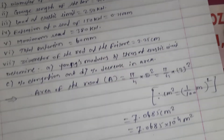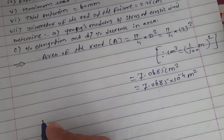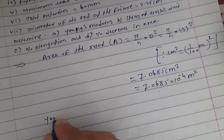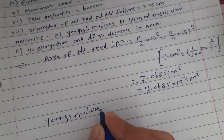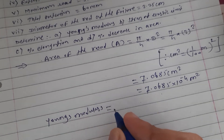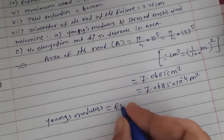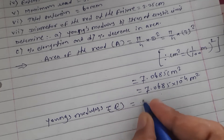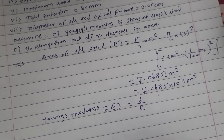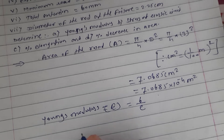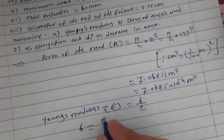Next we want to find out Young's modulus. Young's modulus — also known as modulus of elasticity — is denoted by capital E. Capital E is equal to stress upon strain. We will calculate one by one. Stress is equal to P by A.